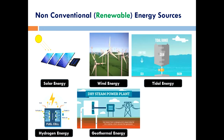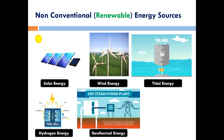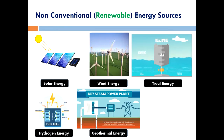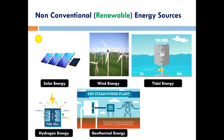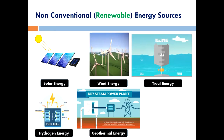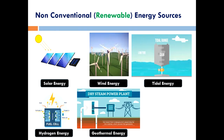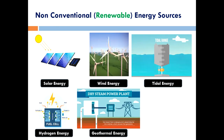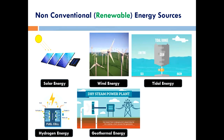Geothermal energy comes from heat within the earth's crust — 'geo' means earth and 'thermal' means heat. Inside the earth, the temperature is quite high; this heat heats up underground water and produces steam. The steam is then used to run turbines to produce electrical energy. New Zealand, USA, and Iceland utilize this source of energy.